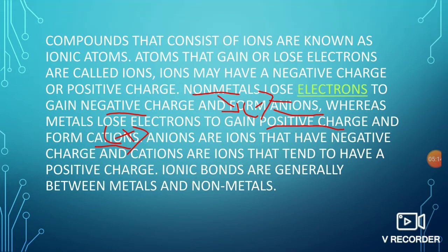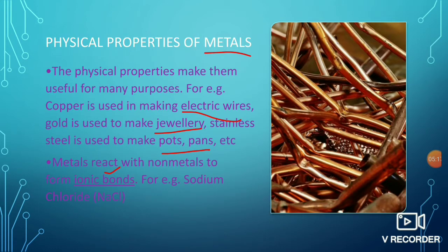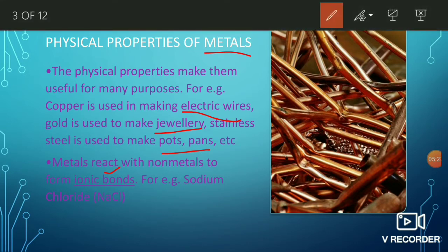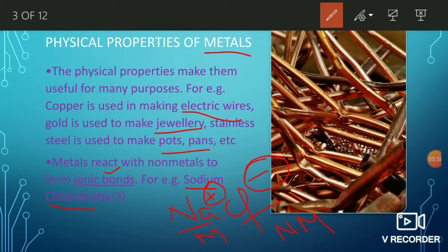Metals and non-metals react to form ionic bonds. For example, sodium chloride (NaCl): sodium is a metal and forms a cation with a positive charge (Na+), and chlorine is a non-metal and forms an anion with a negative charge (Cl-). So the metal and non-metal react to form an ionic bond.